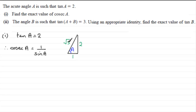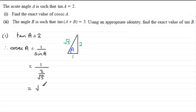So I put that in as root 5. When it comes to finding cosec A, which equals 1 over sine A, we know that sine A compares the opposite to the hypotenuse, so it's 2 over root 5. We have 1 divided by 2 over root 5. Multiplying top and bottom by root 5 gives root 5 over 2. So the exact value of cosec A is root 5 over 2. You don't have to find the angle — just work off the triangle.